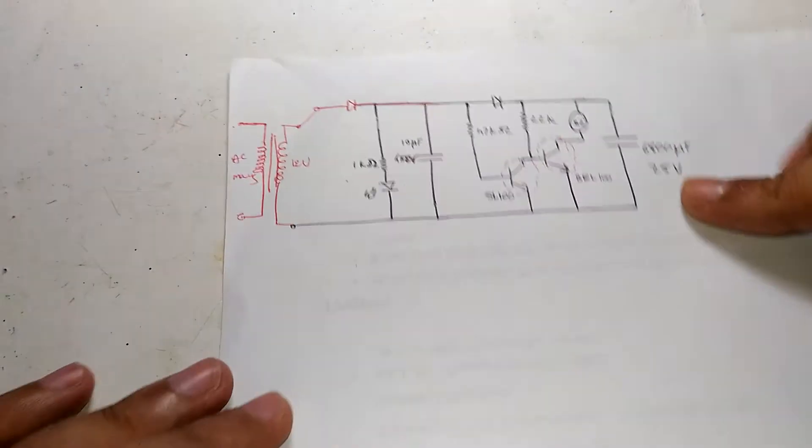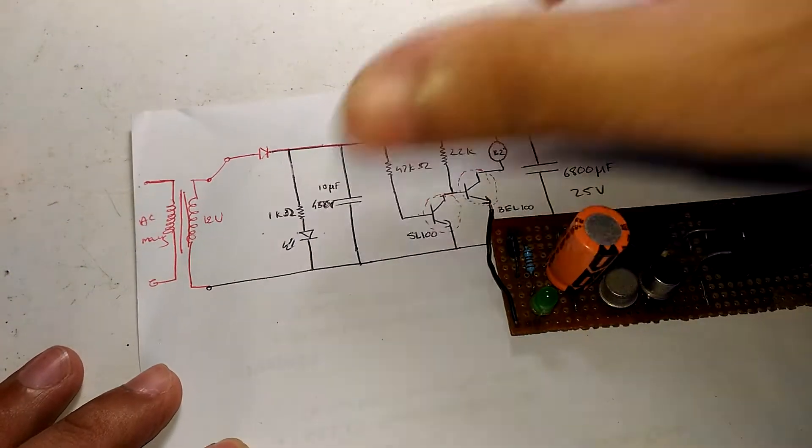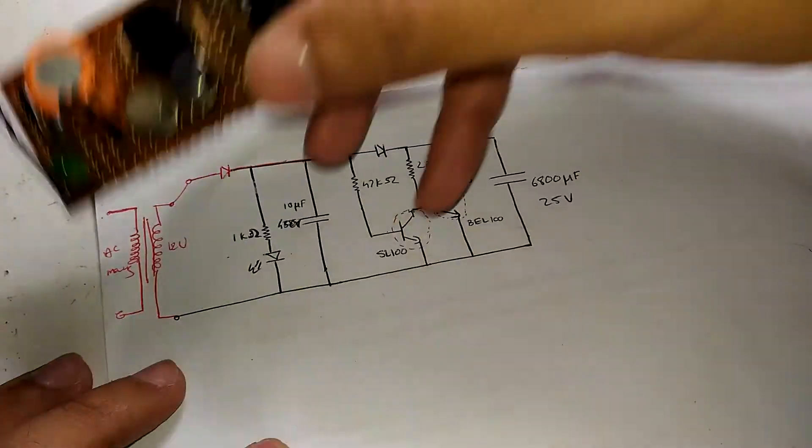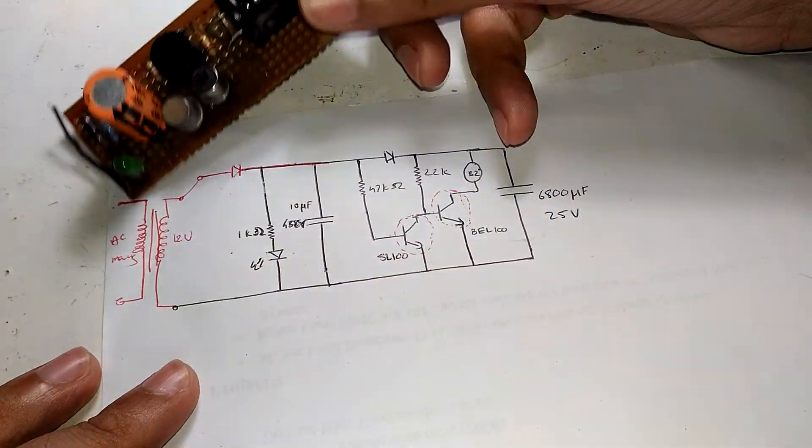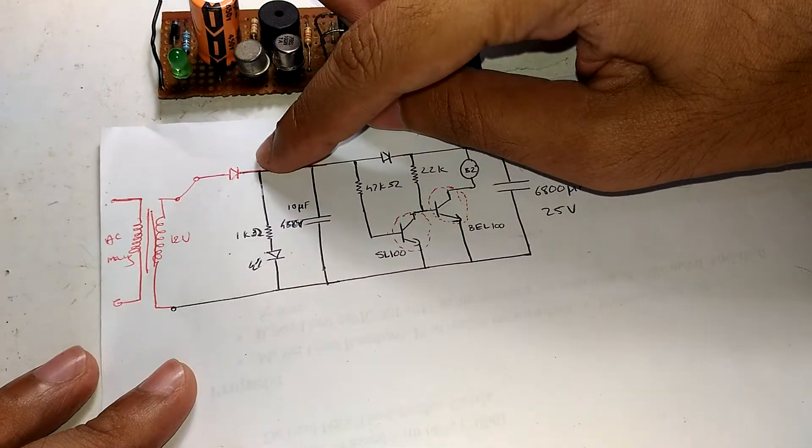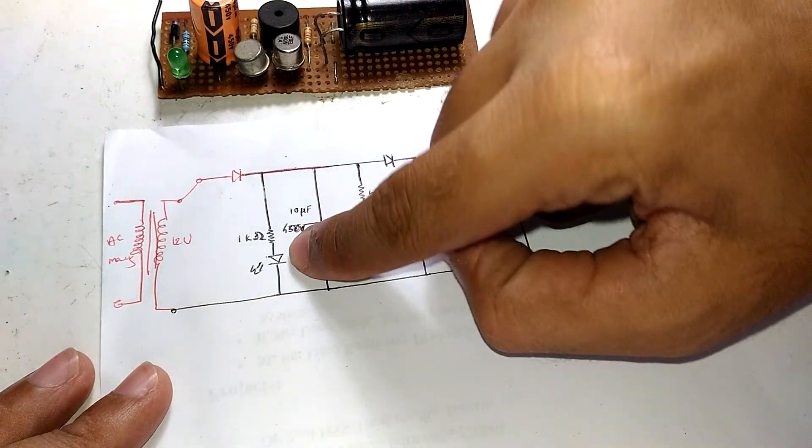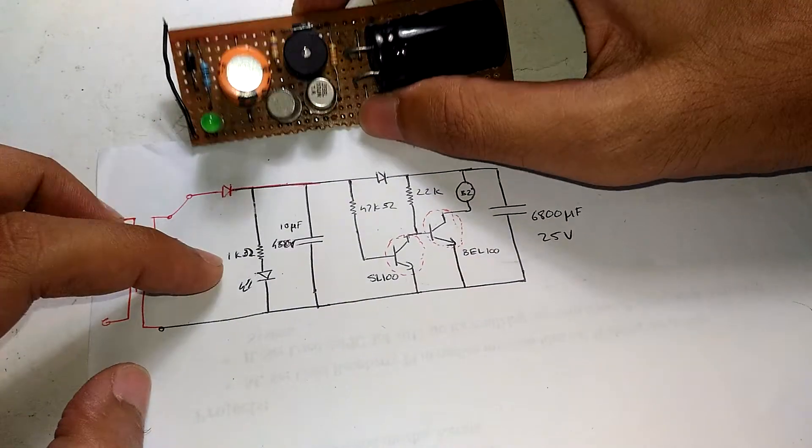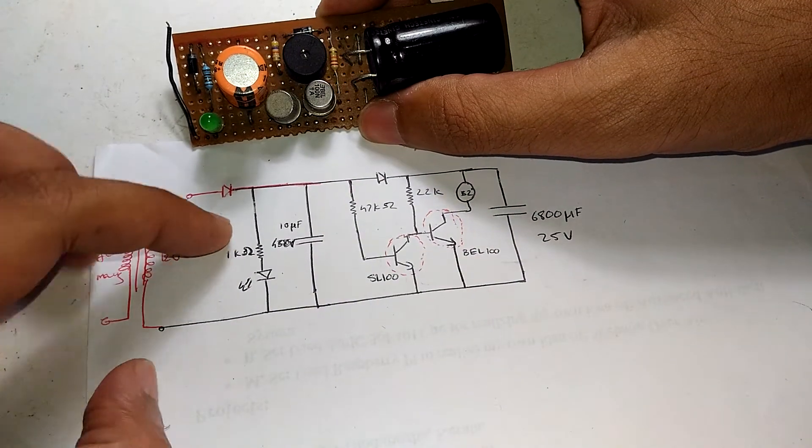We just plug it into an available port. Whenever there's AC mains input, it gets rectified by this diode to 12 volts. That makes this green LED glow, indicating the presence of input.